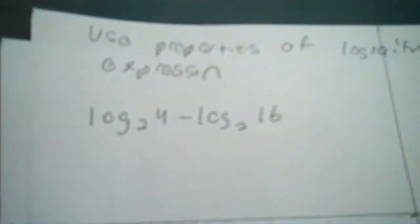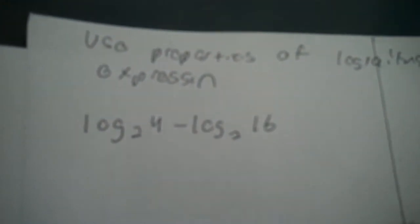Now we're going to go to the back side. A little bit more complicated, but definitely doable. Now you're going to apply some properties you learned yesterday. You've got log base 2 of 4 minus log base 2 of 16. Now first thing you have to do is condense that so it's into a single logarithm.